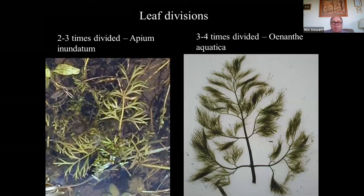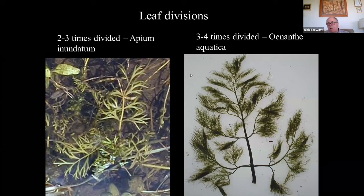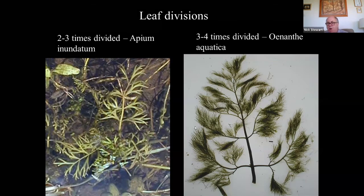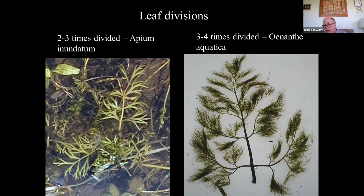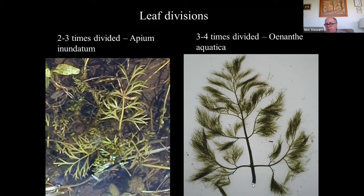Two other ones with more complex divisions: marshwort on the left has two to three times divided leaves with quite a narrow overall leaf shape. Whereas there are water dropworts that have underwater leaves — the feathery water dropwort, which has very complexly three or four times divided leaves. Sometimes you can think that sections are separate leaves, but actually this is all one leaf, which you would know because it would have a clasping base at the bottom.